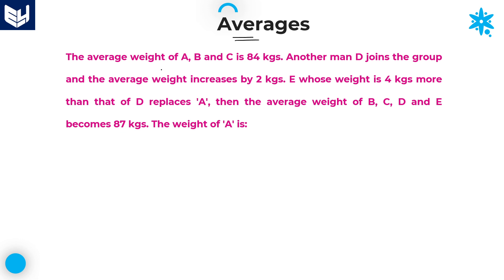The average weight of A, B, C is 84 kg. You need to read each and every line and sentence carefully in order to get the result. If the average of ABC is 84, then the sum of ABC is equal to average into number of persons. Here the average is 84 and the number of persons are 3. Therefore,